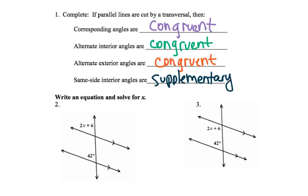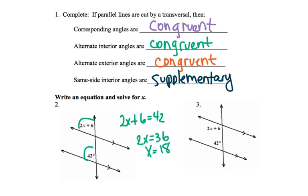Write an equation and solve for x. What we have here are corresponding angles, so we want to set them equal to each other. So we're going to say 2x plus 6 equals 42. We subtract 6 from both sides, so we get 2x equals 36. We divide by 2, and x equals 18.